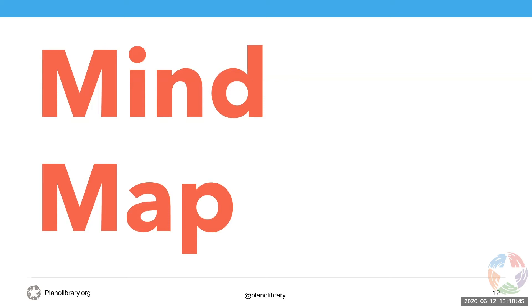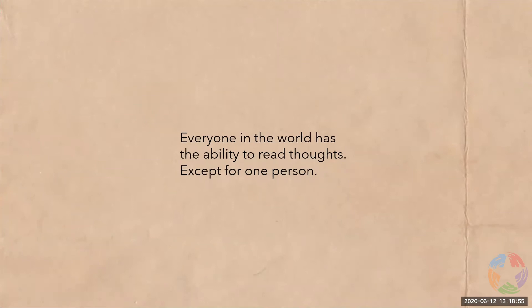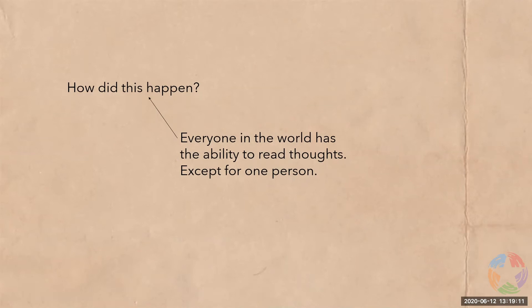Here's our concept: 'Everyone in the world has the ability to read thoughts, except for one person.' Let's ask questions. How did this happen? How did everybody gain the ability to read thoughts? Which world — the real world or a fictional one? What kind of thoughts — complete sentences, or even vague emotions or a stream of consciousness? How are they transmitted?